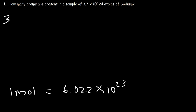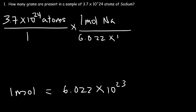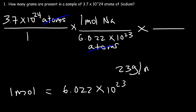Let's start with 3.7 times 10 to the 24 atoms. One mole of sodium is equivalent to 6.022 times 10 to the 23 atoms of sodium, so the unit atoms will cancel. Now the last thing we need to do is convert moles to grams. The molar mass, or the atomic mass of Na, is about 23 grams per mole. So one mole of Na has a mass of 23 grams.